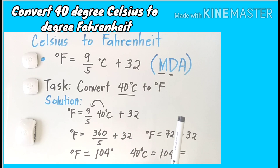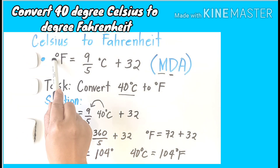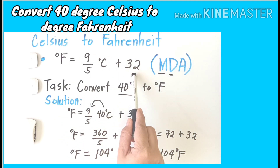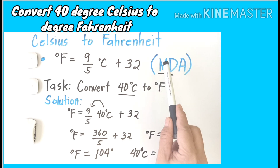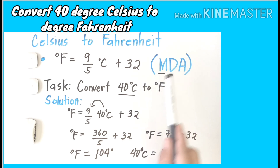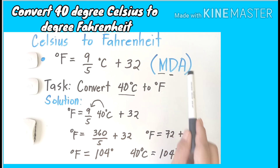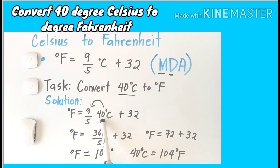We're going to use this formula: degree Fahrenheit equals 9 over 5 times degree Celsius plus 32, and we'll follow the MDA process — that means multiplication, division, and addition. Going back to our solution: degree Fahrenheit equals 9 over 5 times 40 plus 32.